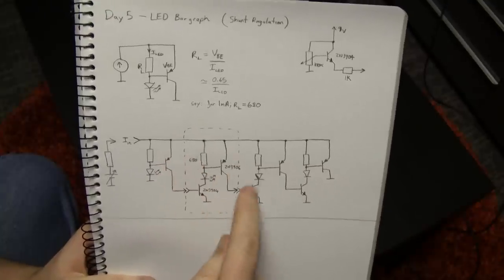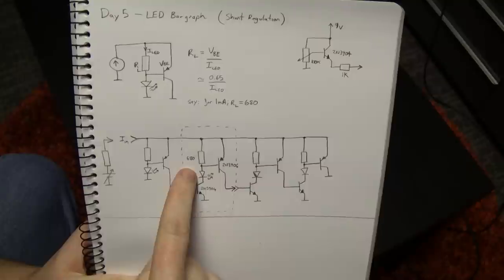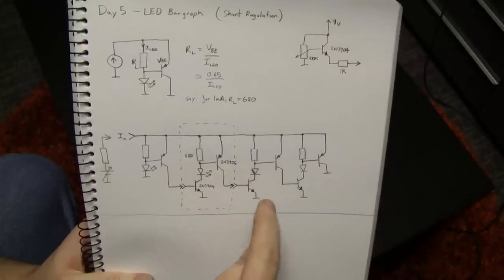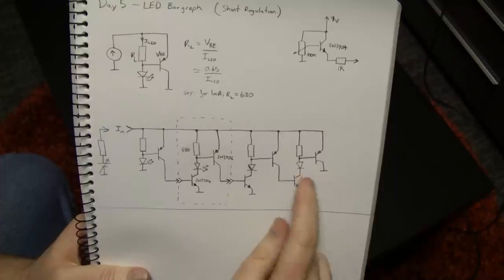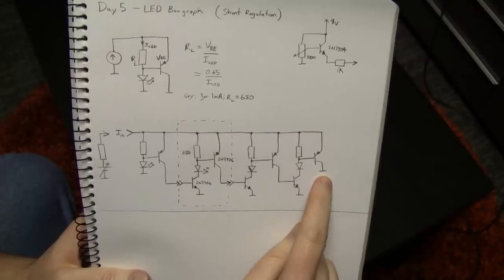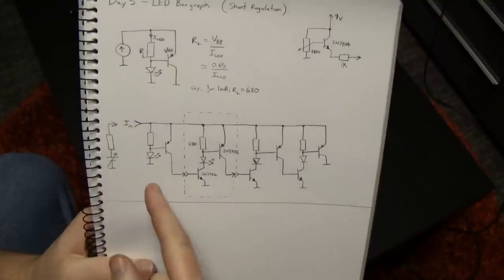And you can cascade these stages. So as soon as this guy's current threshold is exceeded, this transistor turns on, turns on this transistor, and so on. In the very last stage, we do that trick where we just shunt the excess current to ground.